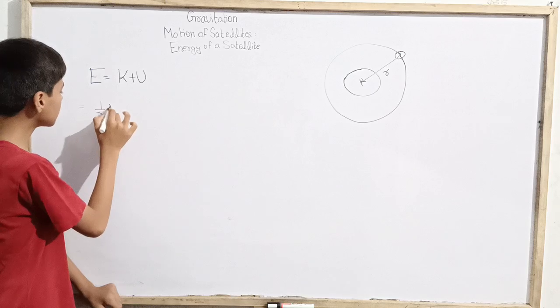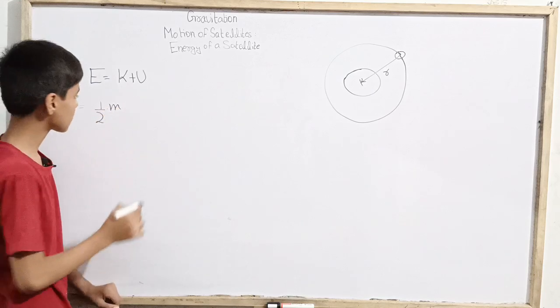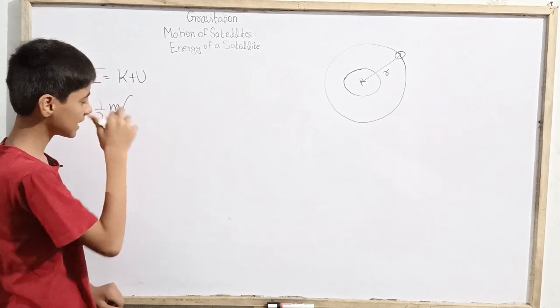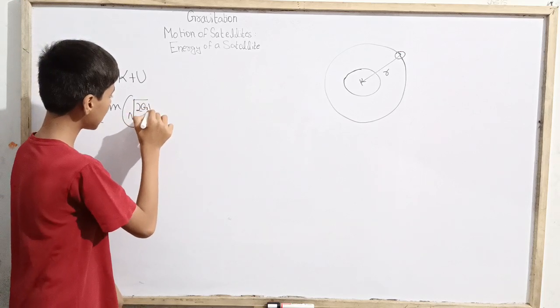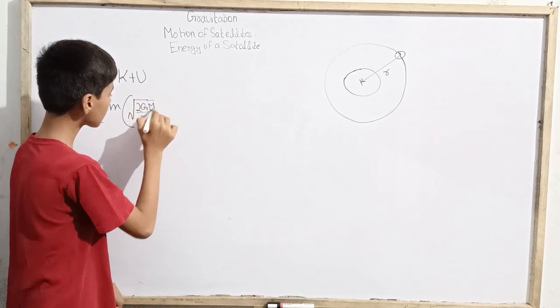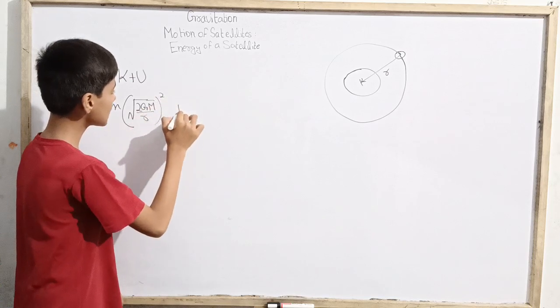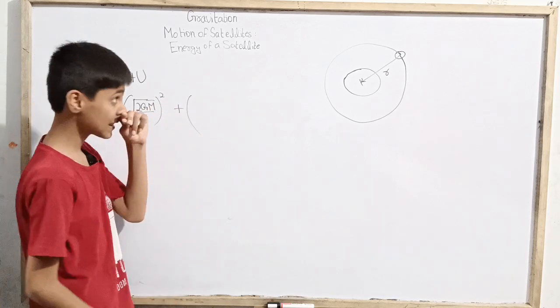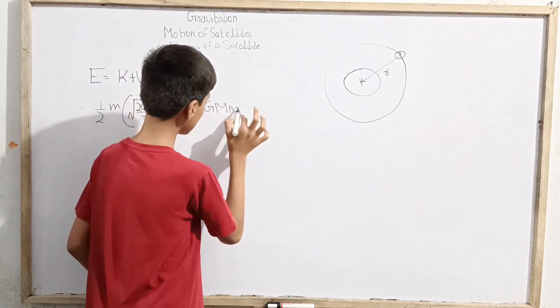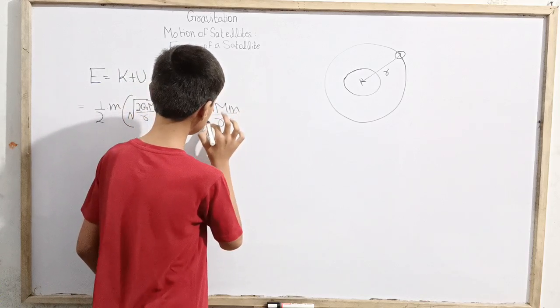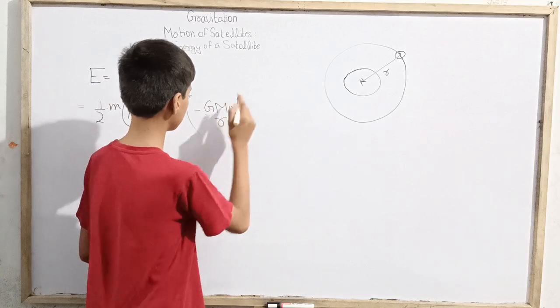The kinetic energy of the satellite is half times mass of the satellite times its speed squared. What is its speed in orbit? Square root of GM over R. So its square plus it has its potential energy, which is minus GMm over R.